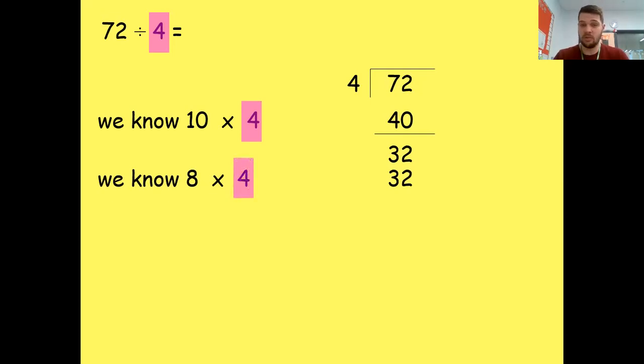So 32 take away 32 is zero. What that means is, I've done 10 times four, and I've done eight times four. So overall, I have done 10 plus eight, I have done 18 times four. So 72 divided by four is 18. All about using the facts that you know. Let's try again.